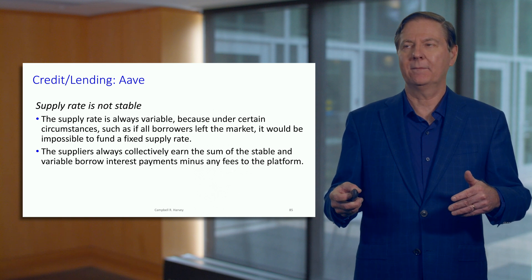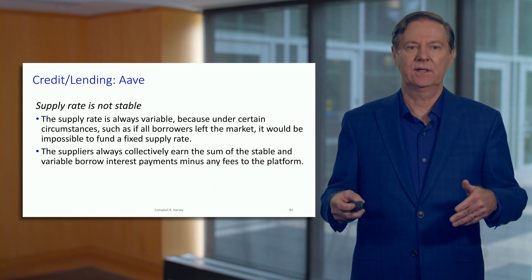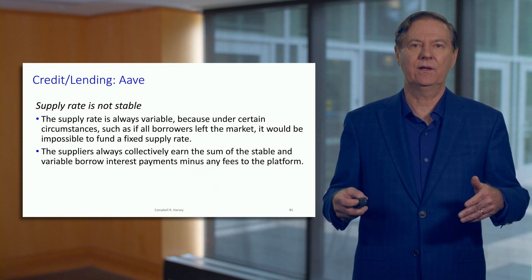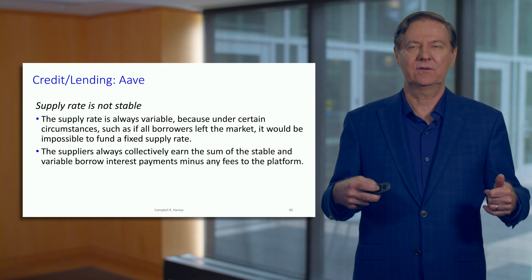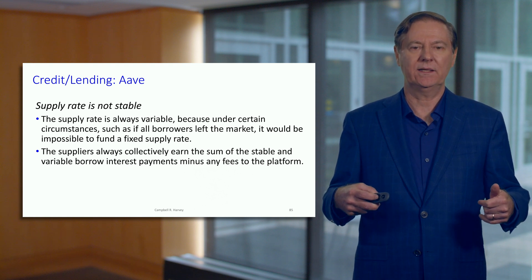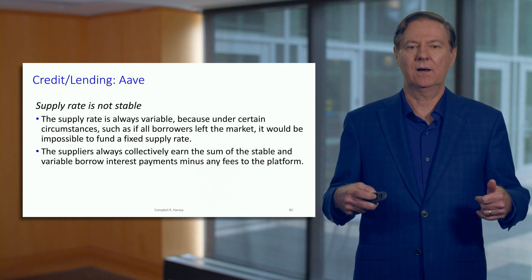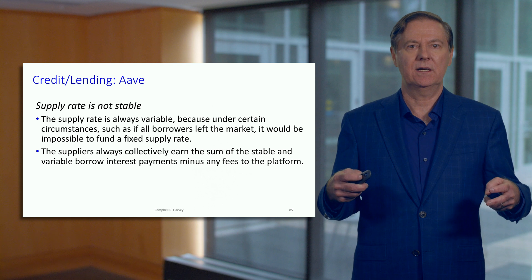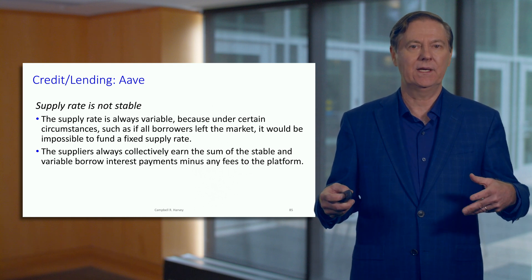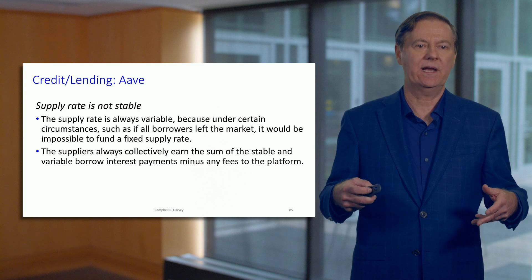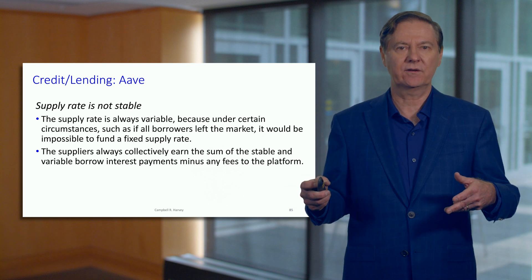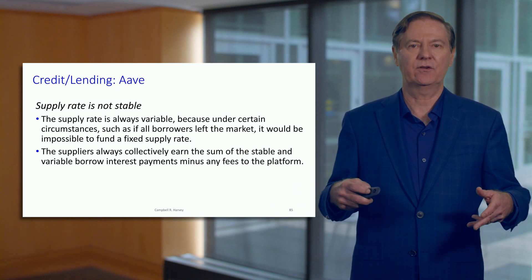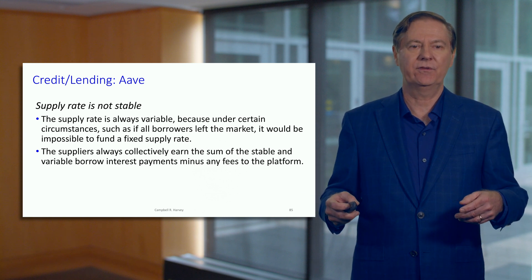The supply rate, in contrast, is not stable — it is always variable. It's really impossible to imagine a model where the supply rate is a fixed rate. The supplier will earn the revenue that comes in from the stable and variable borrowed interest rates, and of course there could be fees deducted from that and other things, but the basic idea is the same as we've seen before.